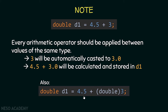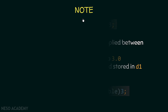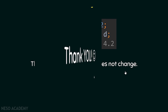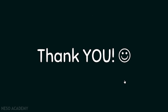One more thing: if you have 'double d = 4.2' and then 'int i = (int) d', the expression is evaluated and converted to an integer stored in i. The variable d is not affected — only its value is used. So i equals 4, and d remains 4.2. The variable being cast does not change. Thanks for watching and I'll see you in the next video.